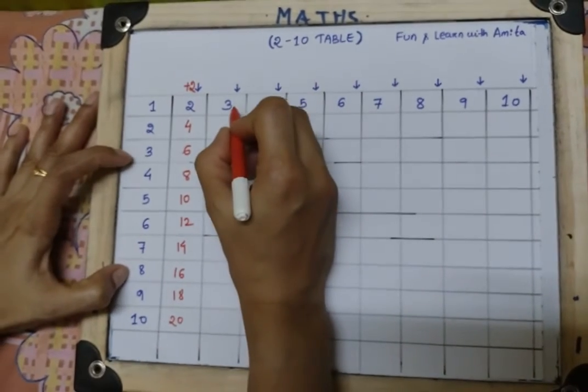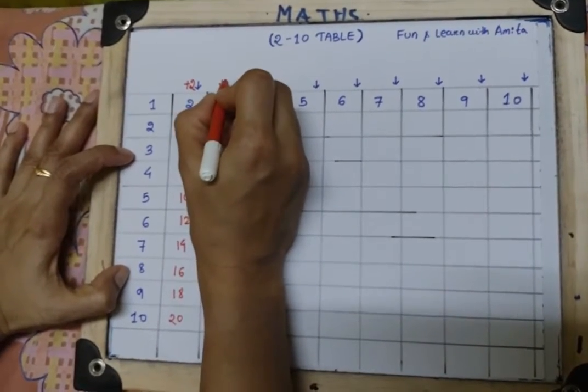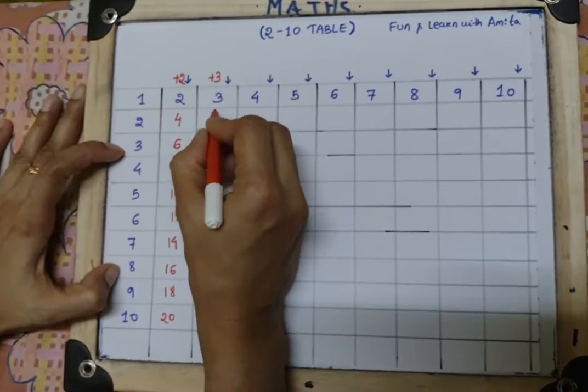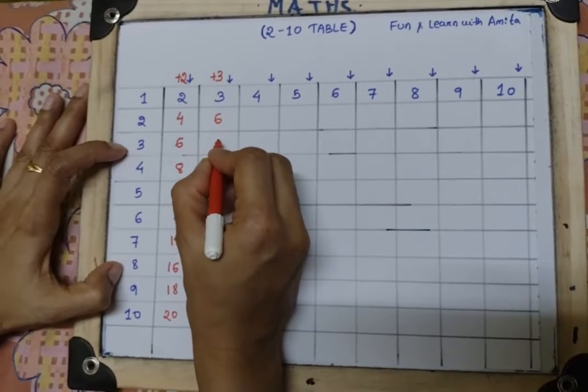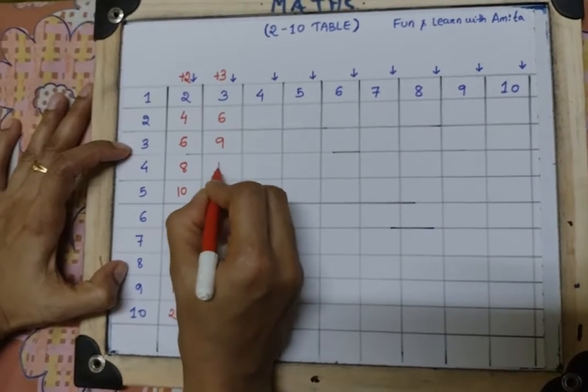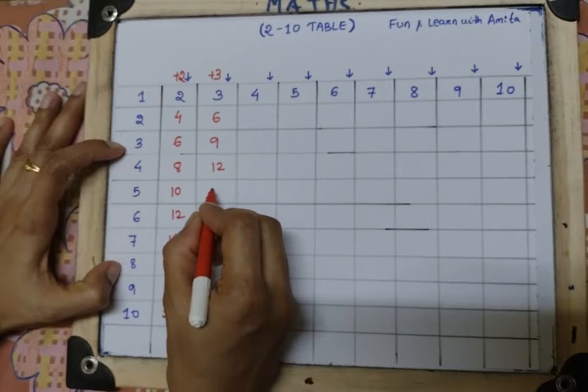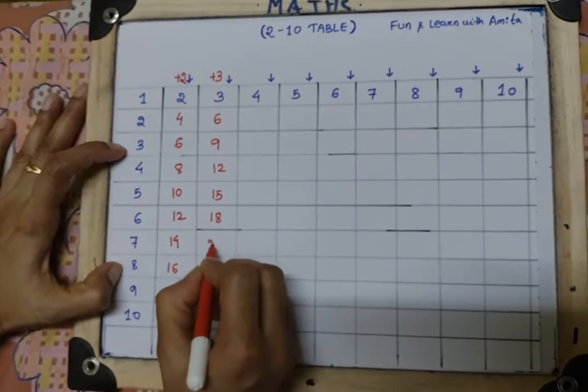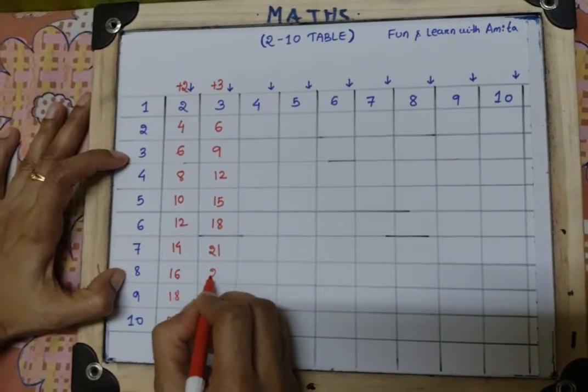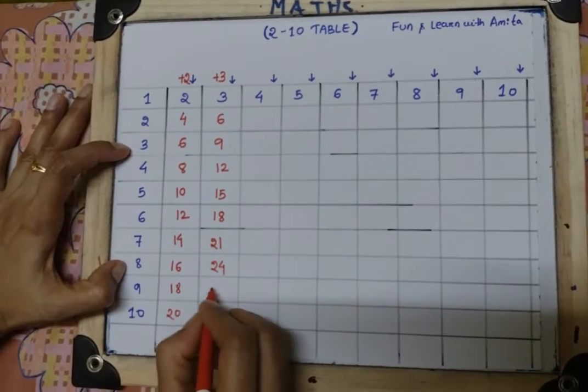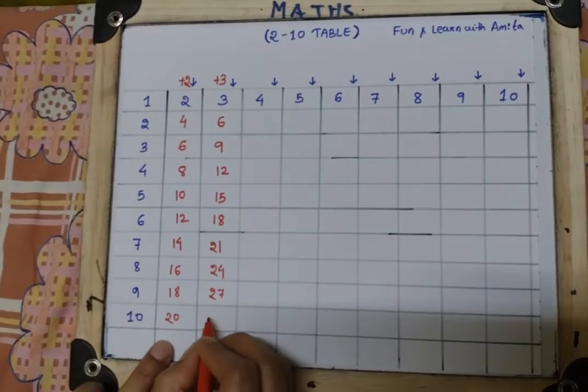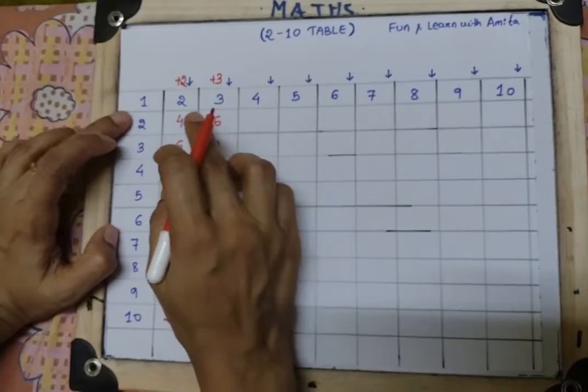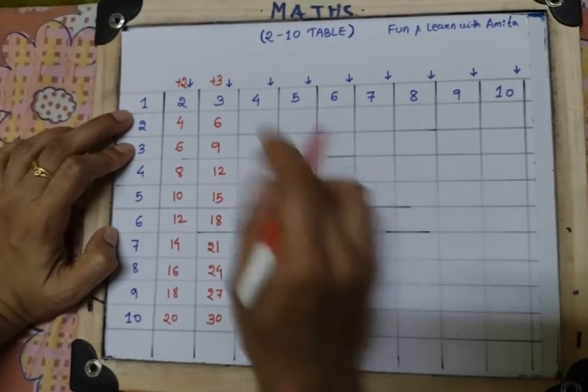Similarly, number 3 is here, so we are going to add number 3. So 3, 3 plus 3 is 6, 6 plus 3 is 9, 9 plus 3 is 12, 12 plus 3 is 15, then 18, then 21, then 24, 27, then 27 plus 3 is 30. Similarly, we are going to fill all the rows like this.